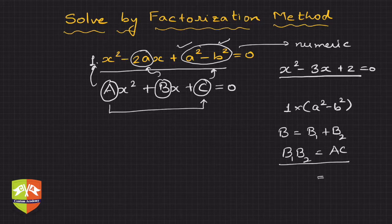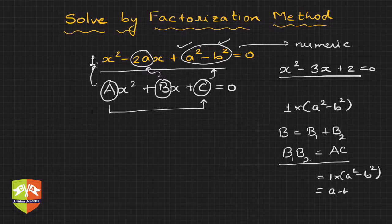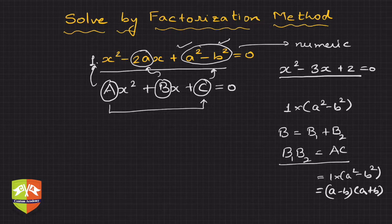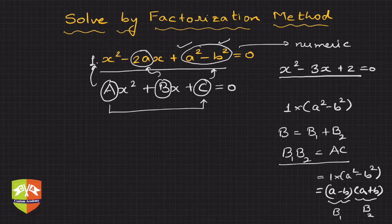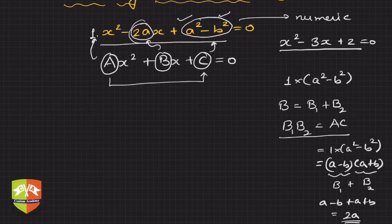Now AC clearly is 1 times (a² - b²). You factorize AC first. If you factorize, it's clearly (a - b)(a + b). Two factors are there. B₁B₂ should be such that the product is AC. If I consider this to be B₁ and this to be B₂, then it suits our requirements. Why? Because if you add B₁ + B₂ you'll get (a - b) + (a + b) which is nothing but 2a, which is here.